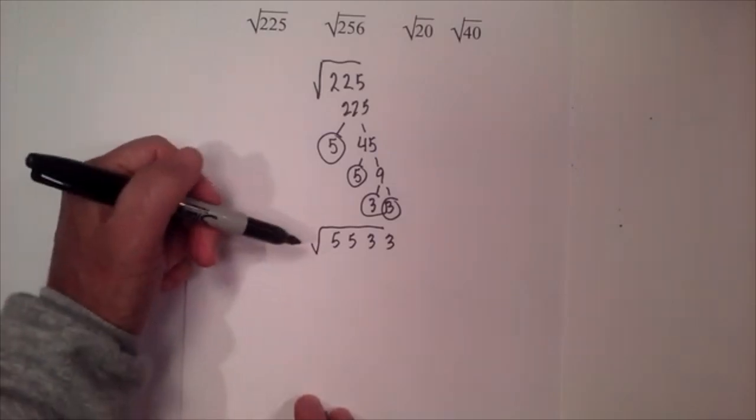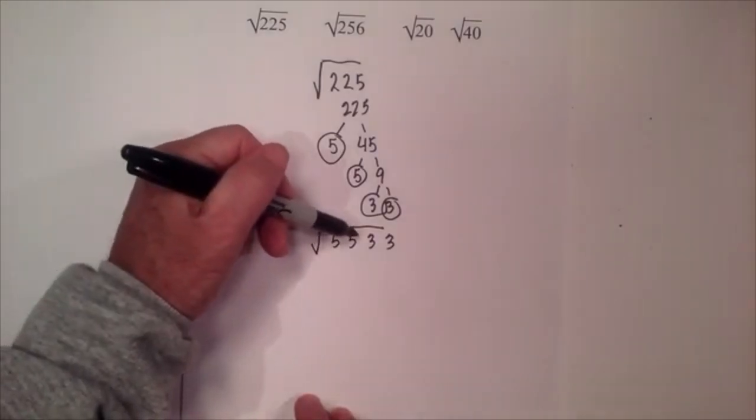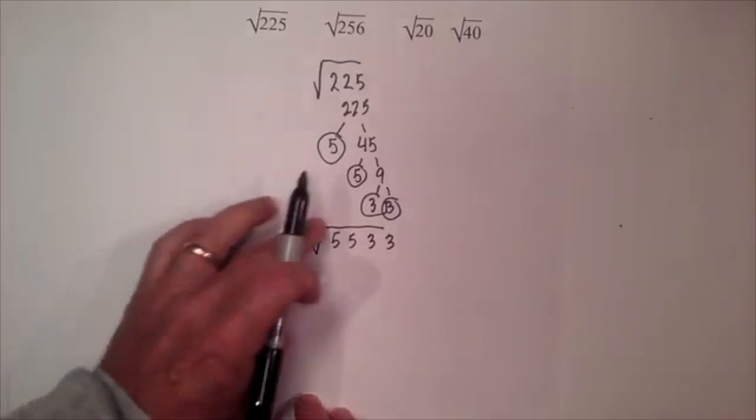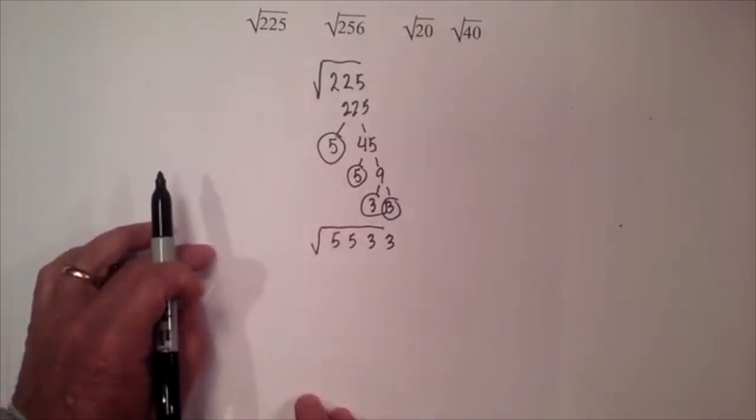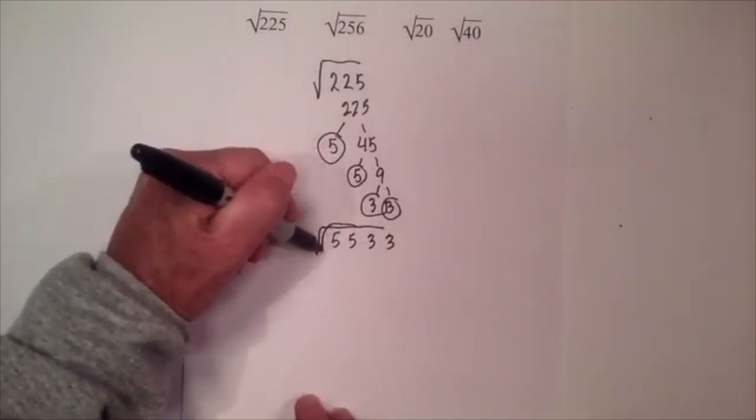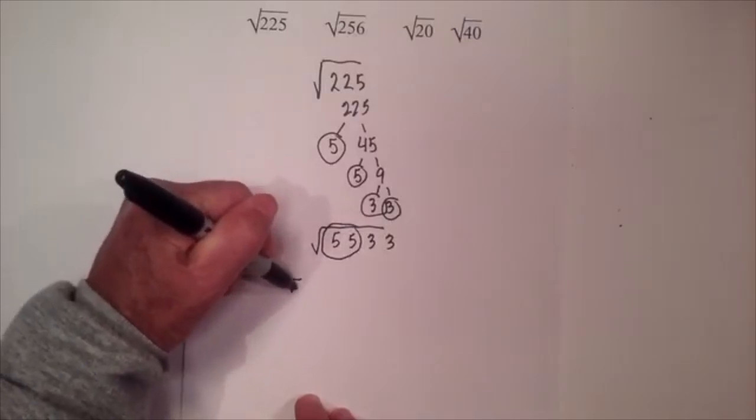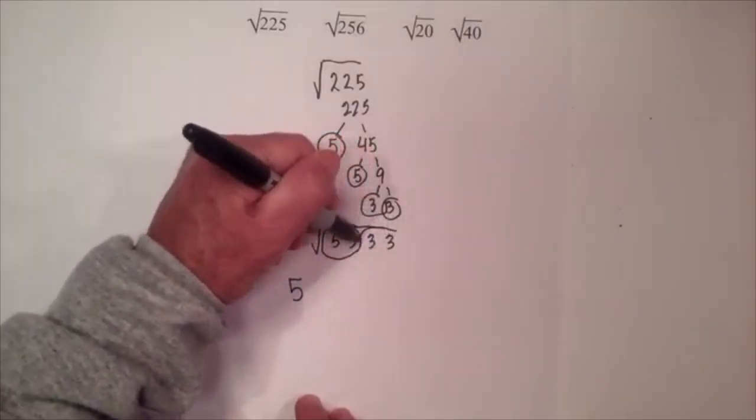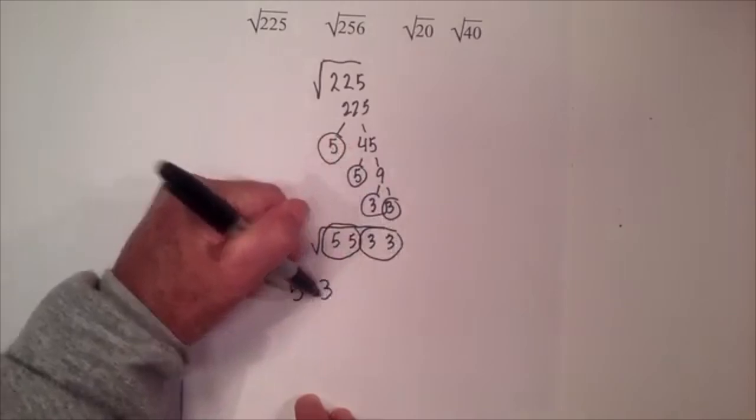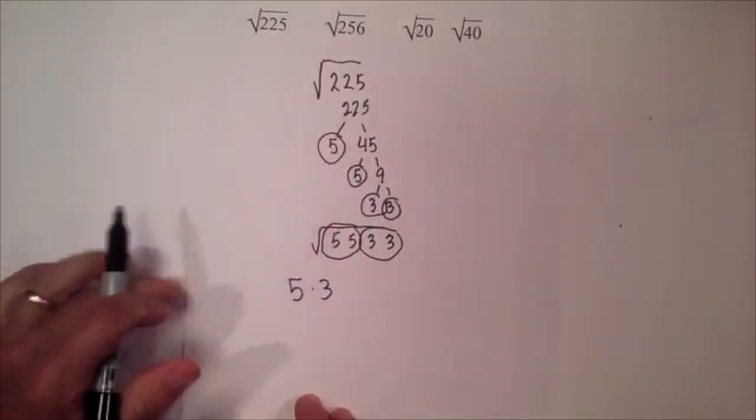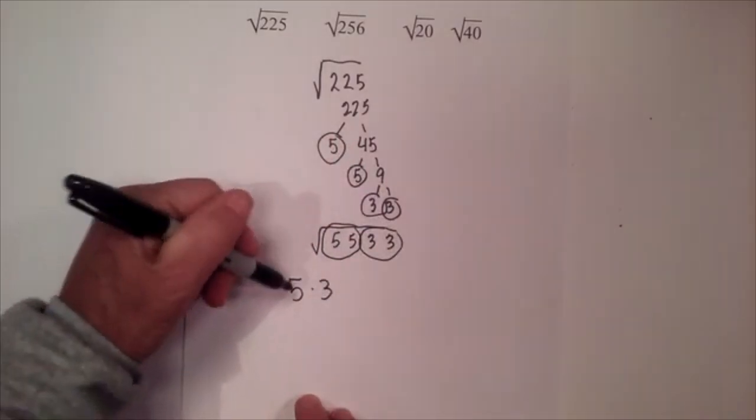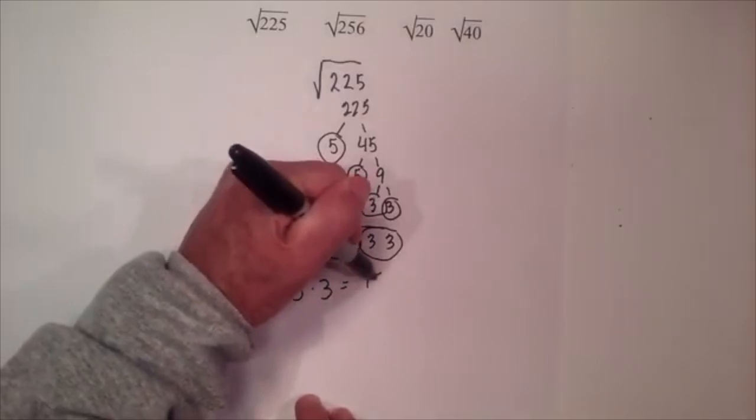Now the rule is, since I have a square root, any pairs that I have I can take out from under the radical sign. So I have two 5's, I'll take them out, and then I have two 3's, I'll take the 3's out. Now there is nothing left under the radical sign. 5 times 3 is 15.